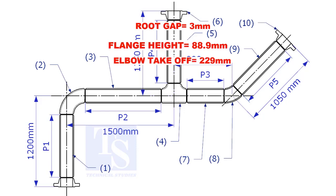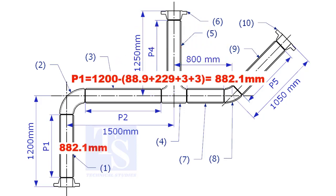Substitute the sum of the height of the flange, elbow takeoff, and two root gaps from the total length of 1500. Length of pipe P1 is 882.1mm.